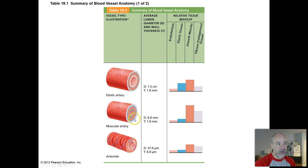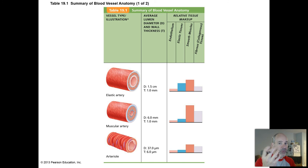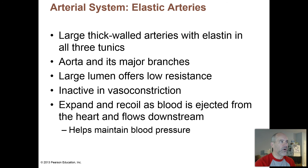The muscular arteries have the most smooth muscle tissue. Those are the ones that tend to get activated by your nervous system the most, to trigger vasoconstriction or vasodilation of those particular arteries.